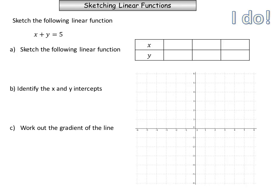Another example of sketching a linear function. Remember the first step is to make sure that y is the subject of the equation. We can see that y is not the subject because we've got x plus y, so we just need to subtract x from both sides and we end up with y equals negative x plus 5.